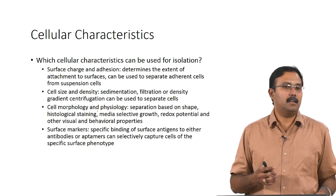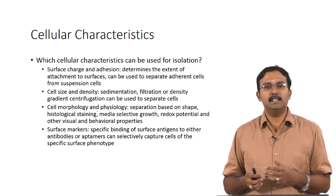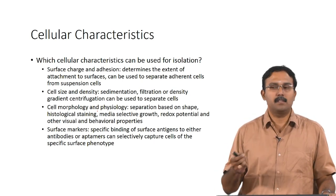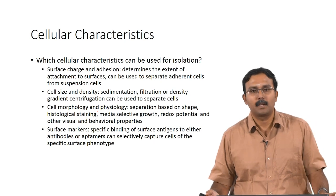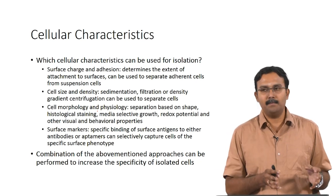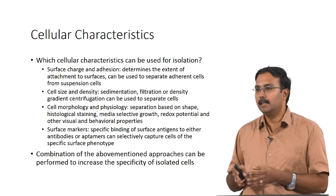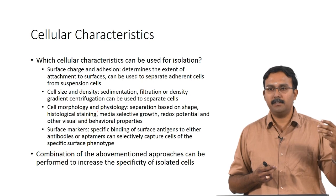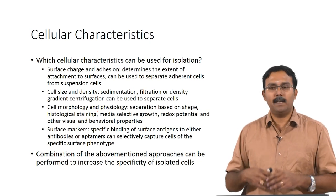The last category is surface markers — the most specific method. Specific binding of a surface antigen to antibodies or aptamers selectively captures cells with a specific surface phenotype. People also work with combinations of these techniques — instead of just using one method, they use combinations to get much higher purity. Usually combinations include one of the first three techniques followed by the surface marker technique, since the first three are cruder and the last one is very specific and highly sophisticated.